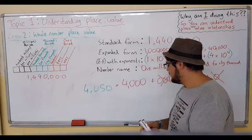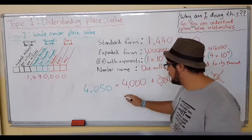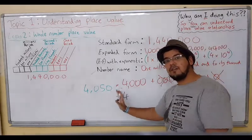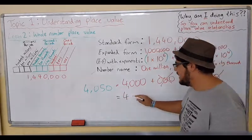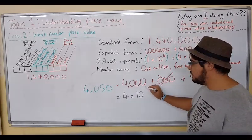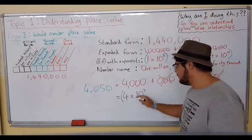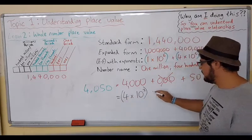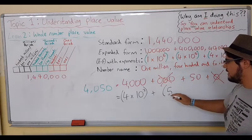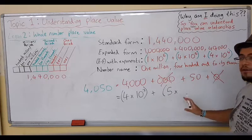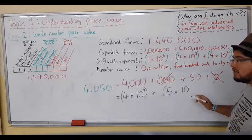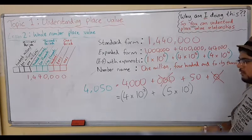Now let's write that with exponents. We take out the four and we have a thousand — how many zeros? Three. So it's four times ten to the power of three, in parentheses. Then for fifty: five multiplied by ten — how many zeros? One. So it's five times ten to the power of one. Final answer: (4 × 10^3) + (5 × 10^1).